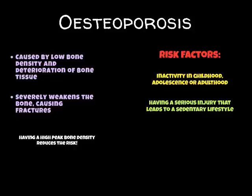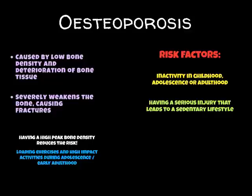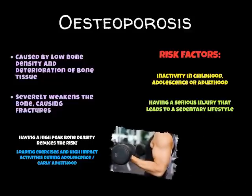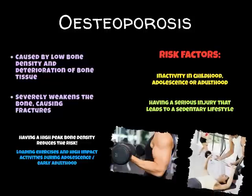To minimise this risk, gaining a high peak bone density will reduce the risk of osteoporosis — making your bones stronger reduces the chance of developing it in later life. Using loading exercises or high-impact activities during adolescence, ages 13 to 21 (early adulthood), can prevent osteoporosis. Loading exercises means using heavy weights, putting more stress on the bone and making them stronger so they repair quicker. Weight training is a good example, as are high-impact activities such as rugby, American football, and wrestling — lots of stress and strength required, helping bones build and become stronger.